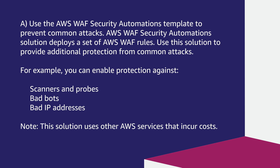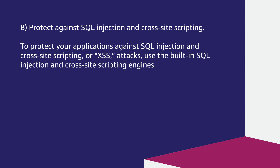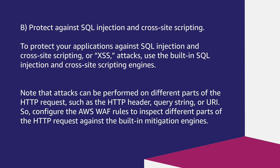Note that this solution uses other AWS services that incur costs. To protect your applications against SQL injection and cross-site scripting (XSS) attacks, use the built-in SQL injection and cross-site scripting engines. Note that attacks can be performed on different parts of the HTTP request, such as the HTTP header, query string, or URI. So configure the AWS WAF rules to inspect different parts of the HTTP request against the built-in mitigation engines.